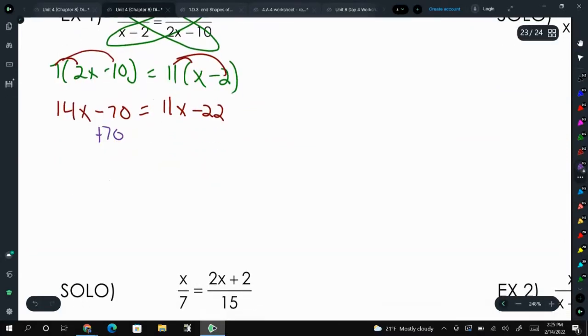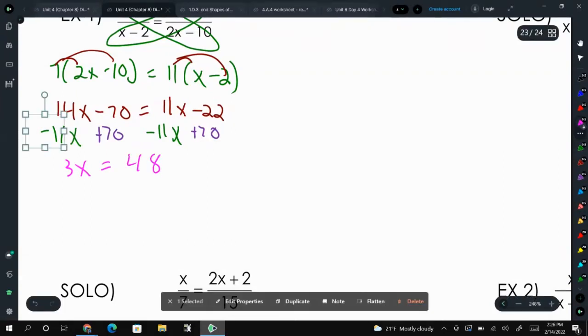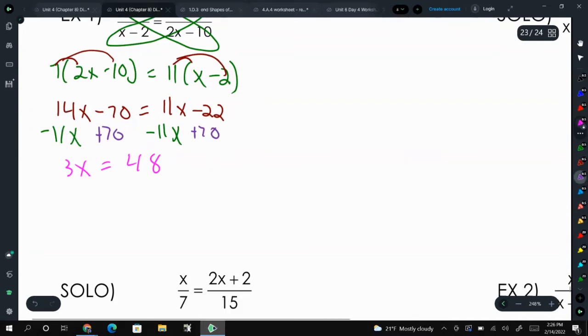So we'll add 70 to both sides, and we'll also subtract 11x from both sides. Because I always like to subtract the smallest x's or move the smaller amount of x's. That way, the number of x's I have will be positive. 14 minus 11 is 3x, and negative 22 plus 70 is 48. And then we can divide both sides by 3, and x is going to equal 16.